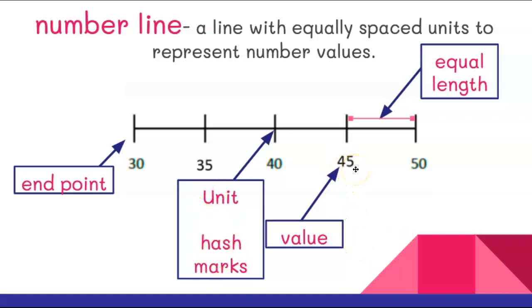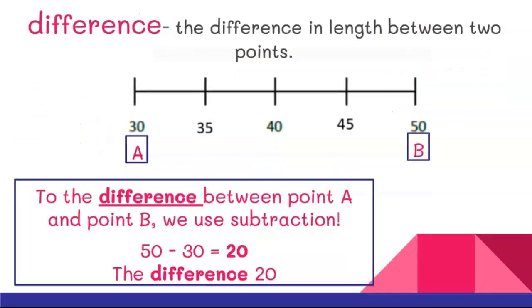The number connected to those units or hash marks — how much it's worth — is called its value. The parts at the end of the number line, like where we have a 30 and a 50, are called end points. So pay attention to the ends of the number line. We're also going to be asked to find the difference today. The difference is the length between two points.